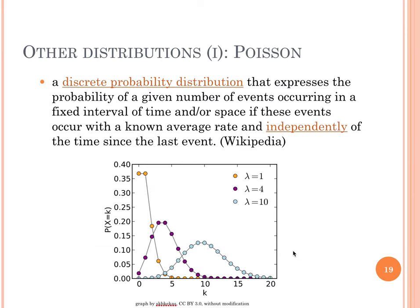Another distribution is the Poisson distribution. The Poisson distribution is a discrete probability distribution that expresses the probability of a number of events occurring in a fixed interval of time and/or space, provided that these events have a known average rate and that each event happens independently from the previous one. It is a parameterized distribution with only one parameter, lambda, which is both the mean and the variance. The Poisson distribution is often used in modeling the counting of random events.